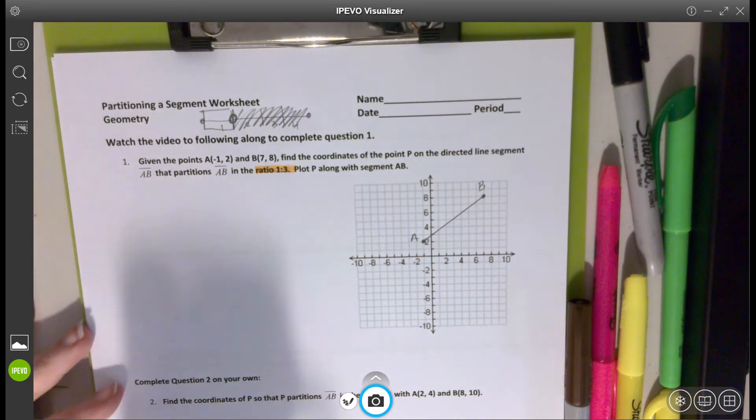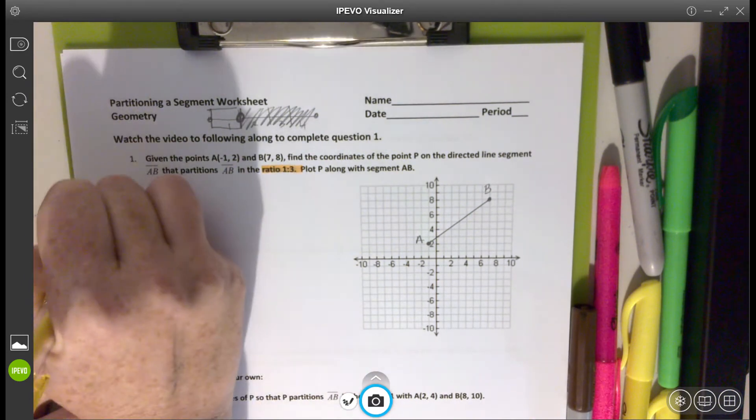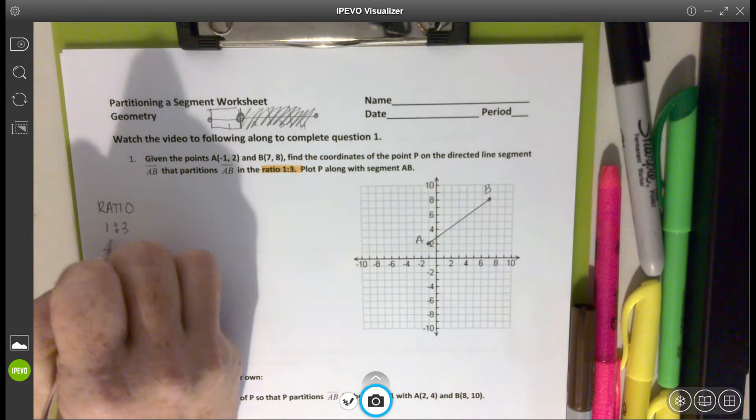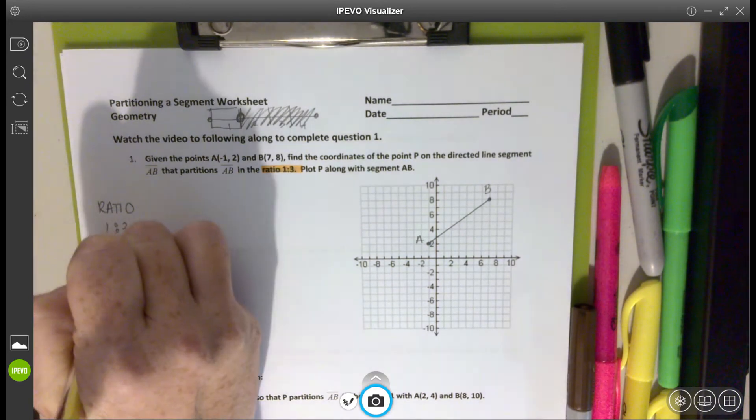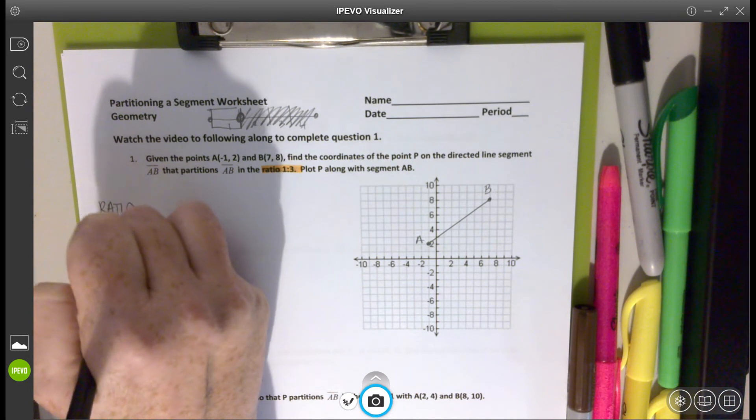So what I'd like to do first is write the ratio: one to three. Sometimes it's going to be written as a fraction, or it could be written like this as well. One to three tells me it's four pieces. So I know that I need to go a fourth of the way. How can I see that it's a fourth of the way? I see that it's a fourth of the way because of the one on the numerator and the four on the denominator that I just created.